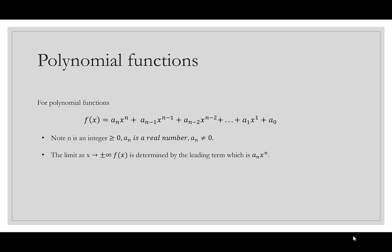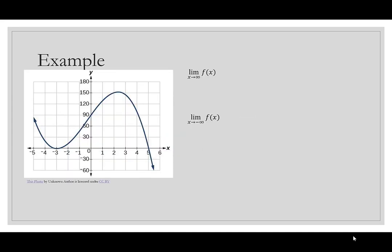When we look at the limit as x goes to positive or negative infinity of f(x), this is really determined by the leading term, which is a_n x^n. Let's start by looking at a graph of a polynomial function, which is a smooth curve, and we want to find the limit as x goes to infinity of f(x).